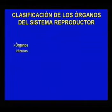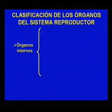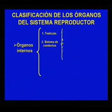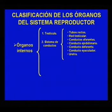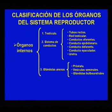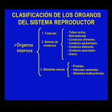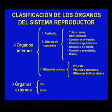Los órganos del sistema reproductor masculino se clasifican de acuerdo a su localización en órganos internos, dentro de los cuales se encuentran el testículo, las estructuras pertenecientes al sistema de conductos como los tubos rectos, red testicular, conductos eferentes, conducto epididimario, conducto deferente, conducto eyaculador y uretra, y las glándulas anexas como la próstata, las vesículas seminales y las glándulas bulbouretrales, y aquellos de localización externa como el pene y el escroto.